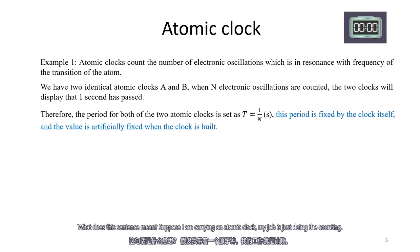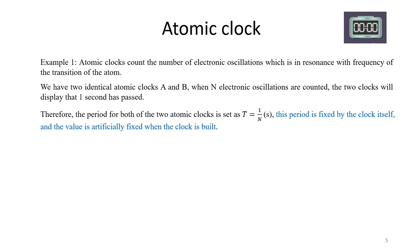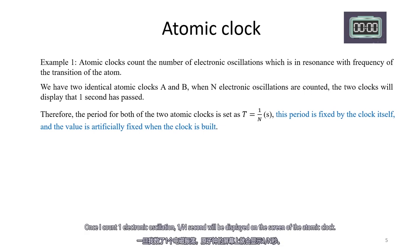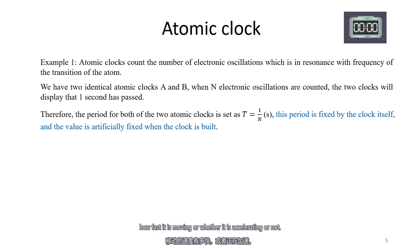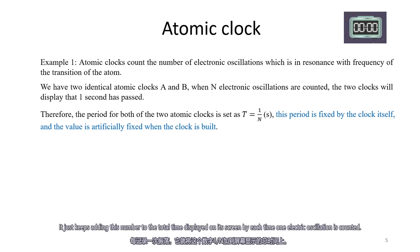What does this mean? Suppose I am carrying an atomic clock and my job is just doing the counting. Once I count one electronic oscillation, one divided by n seconds will be displayed on the screen of the atomic clock. Therefore, the period of each oscillation is fixed as one divided by n seconds by the clock itself, regardless of where it is, how fast it is moving, or whether it is oscillating or not. It just keeps adding this number to the total time displayed on the screen each time one oscillation is counted.